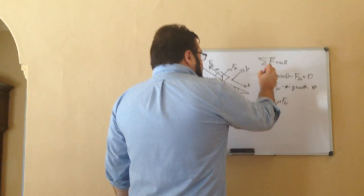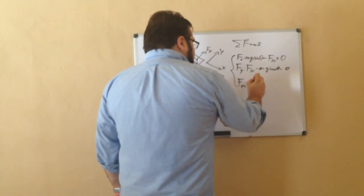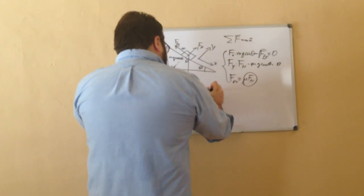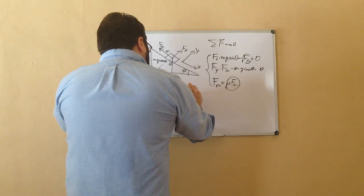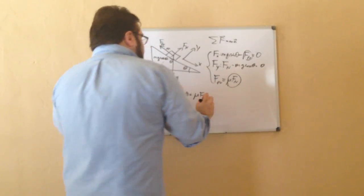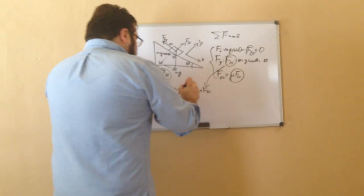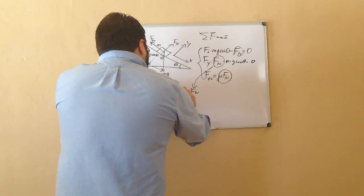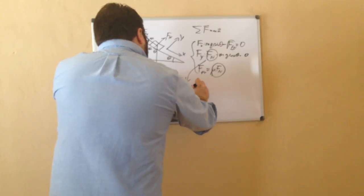So we have three equations here, and that's enough to solve everything. What I'm going to do is put this into here, which leads to mg sine theta equals mu times fn. Then we're going to put this into here, which is going to lead to mg sine theta equals mu times mg cosine theta.